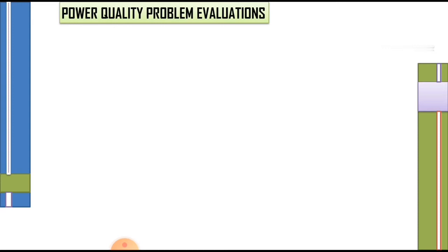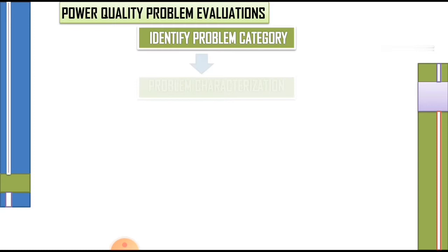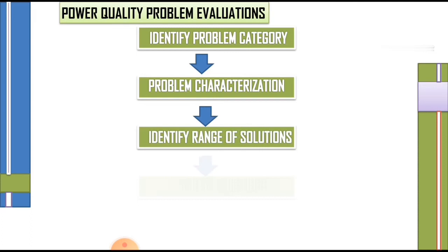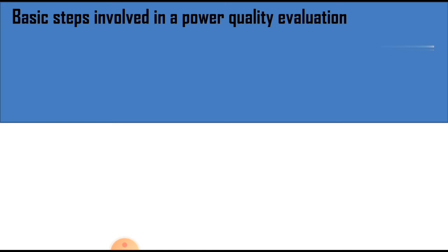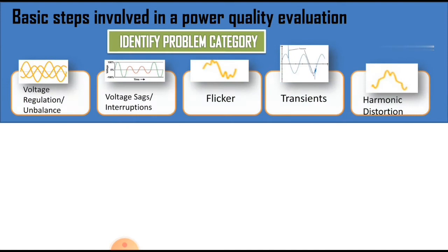The basic steps involved in a power quality evaluation are: identify problem category, problem characterization, identify range of solutions, evaluate solutions, and select the optimum solution. In the case of identifying the problem category, this includes voltage regulation, voltage unbalance, voltage sags or interruptions, flicker, transients, or harmonic distortion. These are the causes we must identify in the power system.